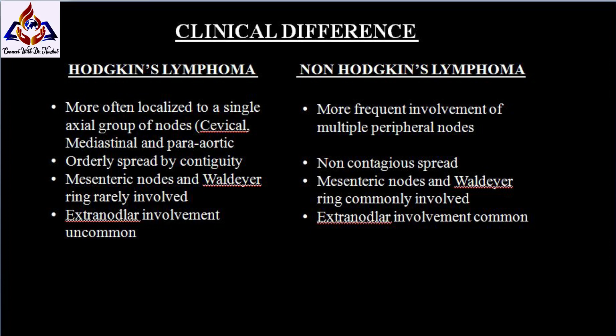Differences between Hodgkin's and non-Hodgkin lymphoma: In Hodgkin lymphoma, disease is more often localized, but in non-Hodgkin there is more frequent involvement of multiple peripheral nodes. Hodgkin's shows orderly spreading, while non-Hodgkin shows non-contiguous spread. In Hodgkin lymphoma, mesenteric nodes and Waldeyer's ring are rarely involved, but in non-Hodgkin they are commonly involved.